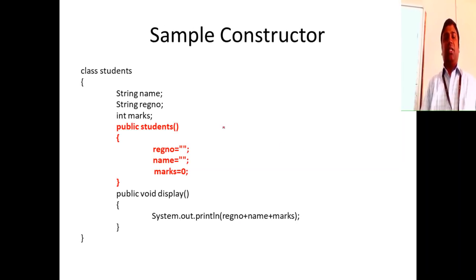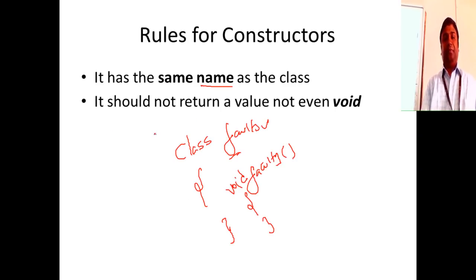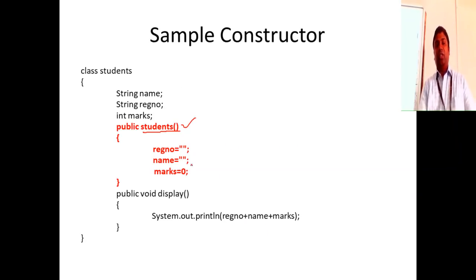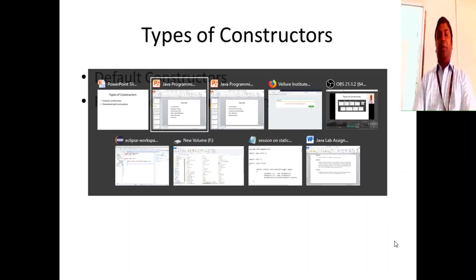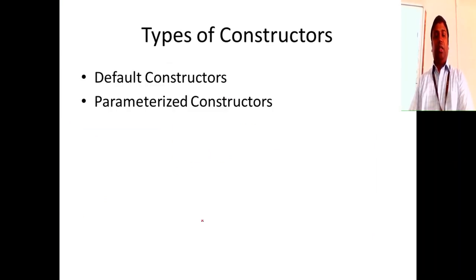Let's look at a constructor using a Students class. Here I put 'void Faculty' — that is wrong, it should not have a return type. It's 'public Students'. You put some values here, and once when that object is created on the heap, it will assign all the initial values to the data items on the heap. That is the use of a constructor. Let's go code it in Eclipse.